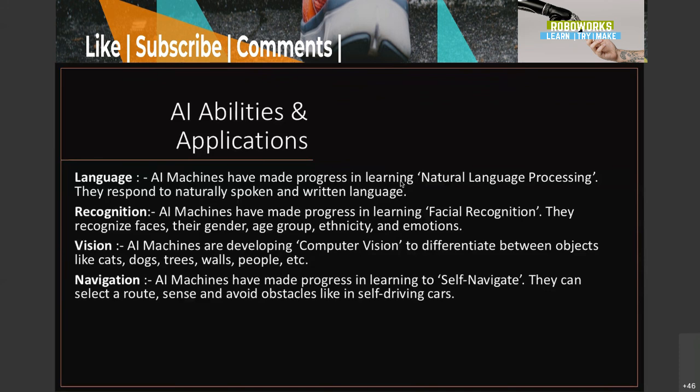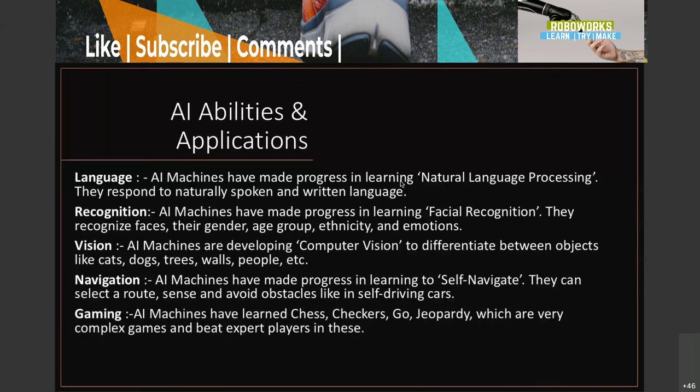On the navigation side, machines can learn self-navigation, sensing routes and surroundings. The best example is the self-driving car, which is the hottest thing in the market right now. Tesla is getting successful largely because of self-driving car technology. AI can also replace humans as companions in gaming.